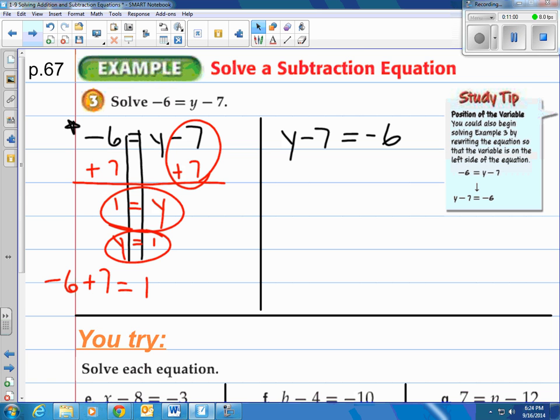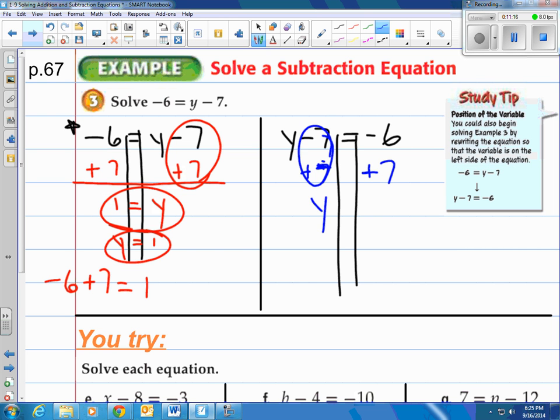Same thing over here on the left side. I'm going to draw my train tracks just like I'll have you do in class. And then y minus 7 is equal to negative 6. I still add 7 to both sides. When I do that, this disappears and we're left with y. And then negative 6 plus 7, that's going to equal 1 again. So, y is equal to 1.